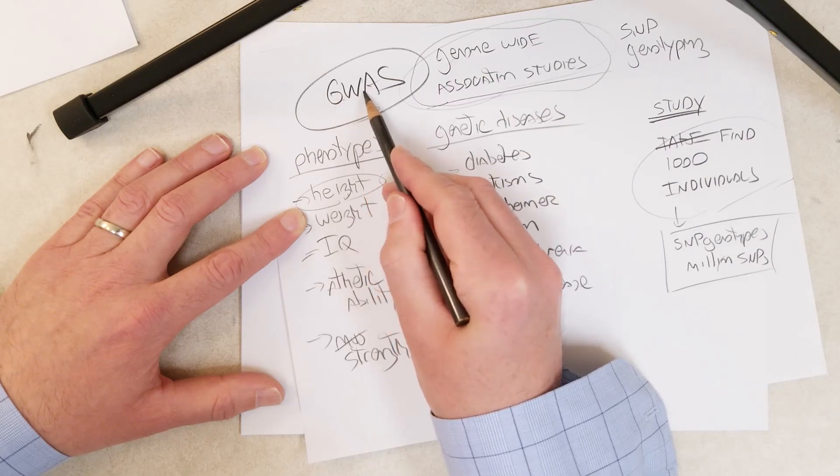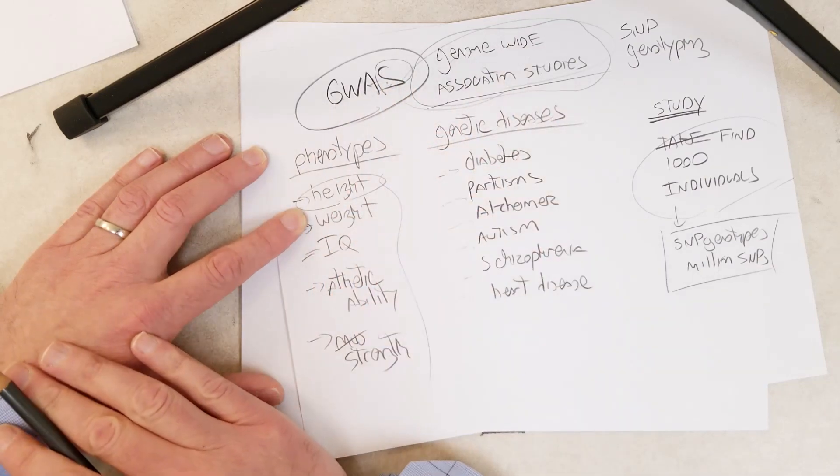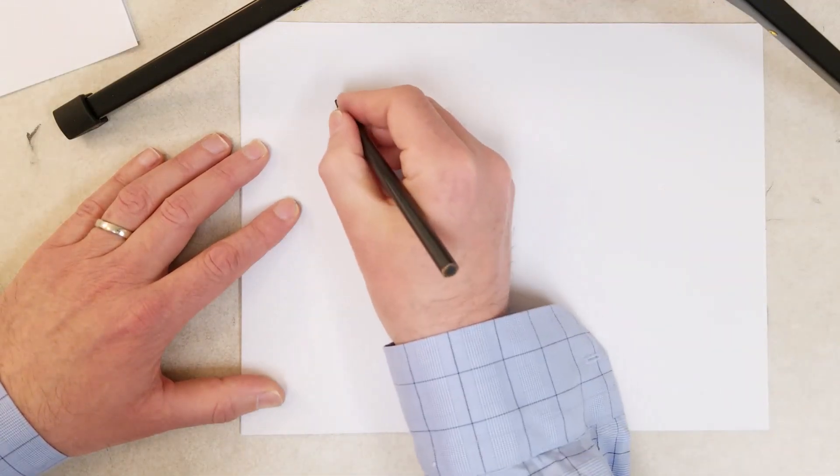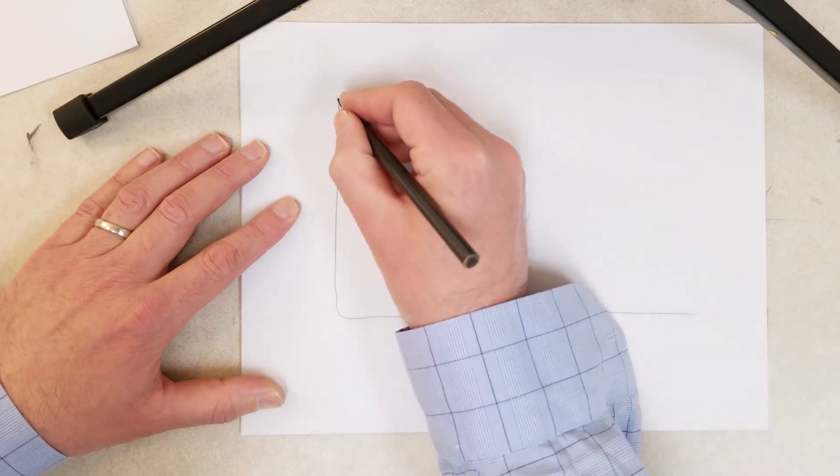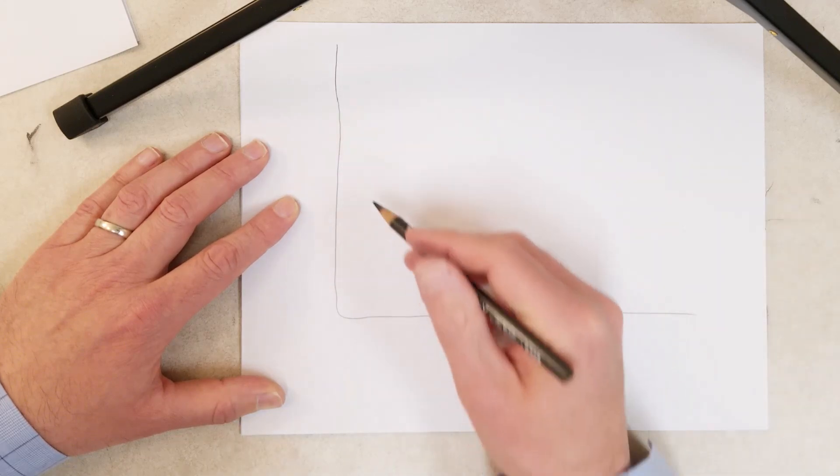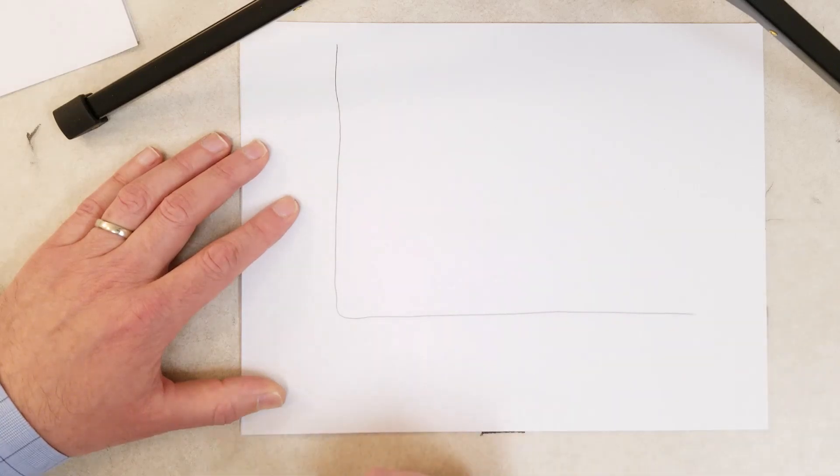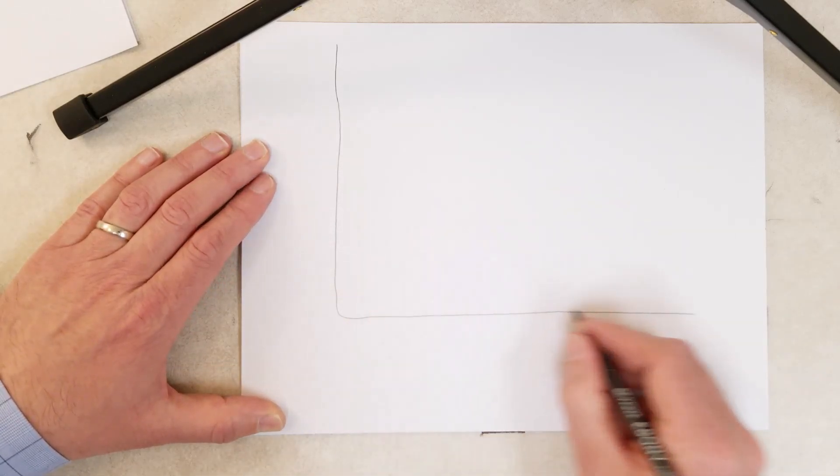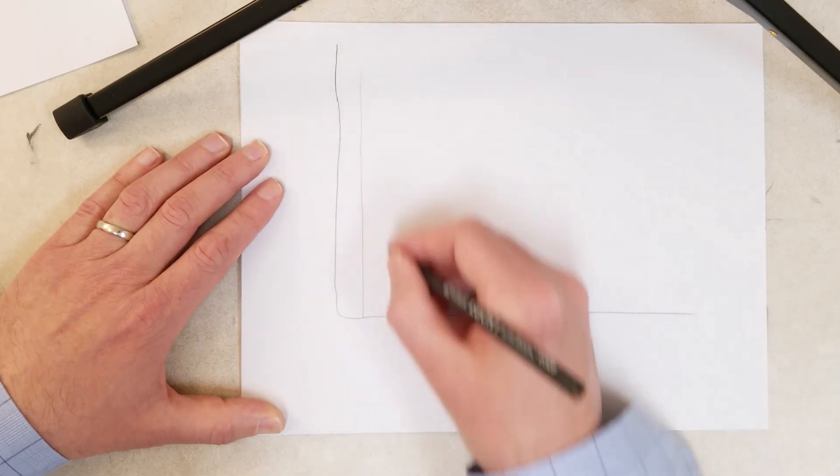Technically you'd say GWAS study because the S stands for study, but you can say GWAS studies too. In a GWAS study, the data is typically presented with what's called a Manhattan plot. It's called a Manhattan plot because once all the data is plotted, it can look like a skyline with a bunch of skyscrapers. With a Manhattan plot, the x-axis represents all the points on the human genome.